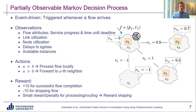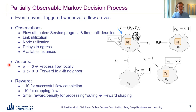To develop this deep reinforcement learning approach we define a partially observable Markov decision process (POMDP). Observations and actions occur whenever a flow arrives at a node. For example, when flow F arrives at node v1, the RL agent observes information about the flow — its progress within the service and the time until its deadline — as well as current link utilization of all outgoing links, node utilization of the node itself and its direct neighbors, and other information such as delays and available instances. Based on these observations, the agent takes an action determining whether the flow is processed locally or forwarded to one of the node's neighbors, which can then make their own decisions.